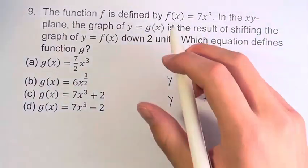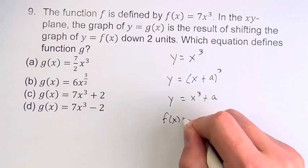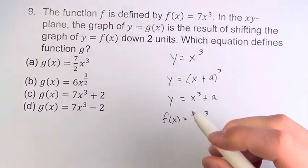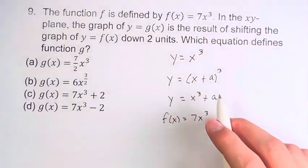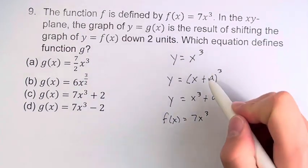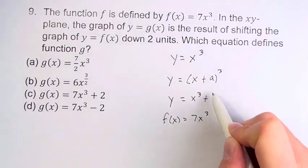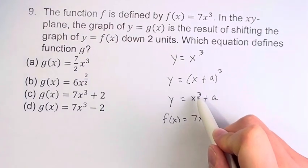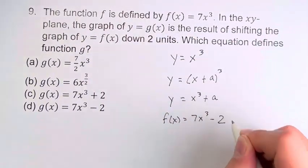Therefore, if we're looking to shift f of x is equal to 7x cubed down two units, we have to bring the thing outside. We're not doing this—this is going to shift it left to right. It's outside of the cubed term. And it's down two, so it's minus two.